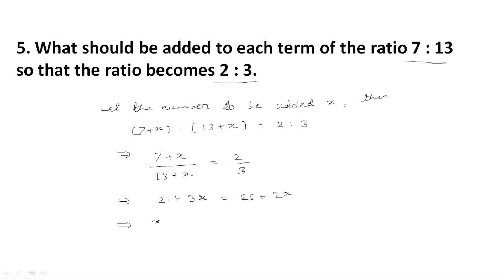This implies 3x minus 2x is equal to 26 minus 21. This gives x is equal to 5. So, the number that should be added to the ratio 7 is to 13 so that it becomes 2 is to 3 is 5.